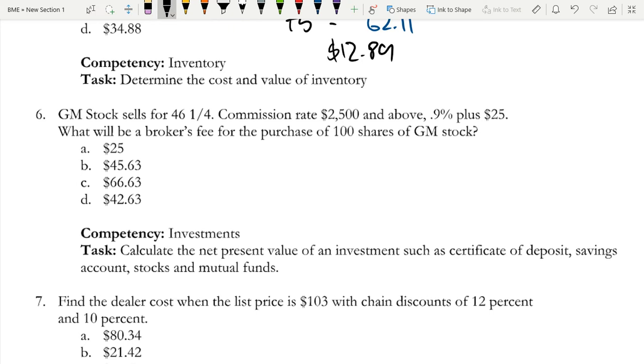GM stock sells for $46.25. Commission rate $2,500 and above, 0.9% plus $25. What will a broker's fee be for the purchase of 100 shares of GM stock?